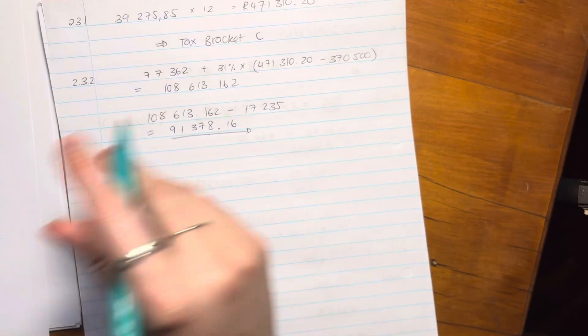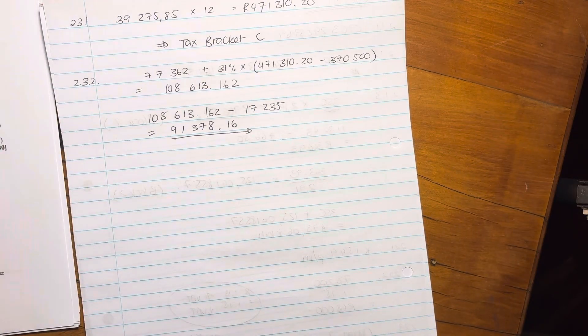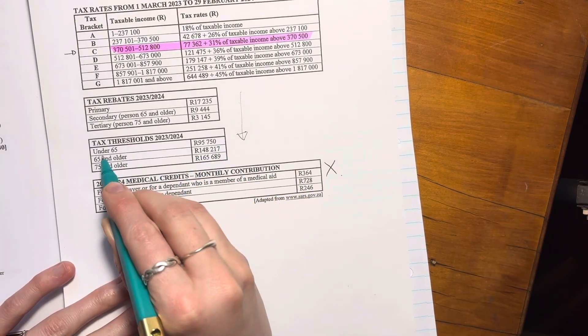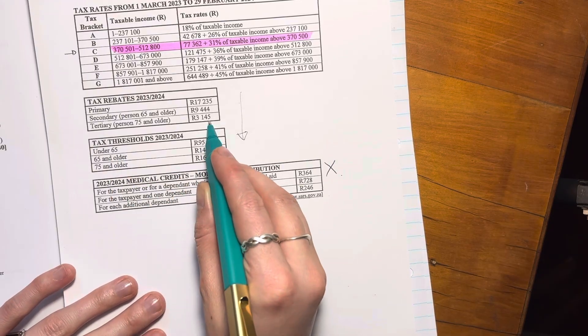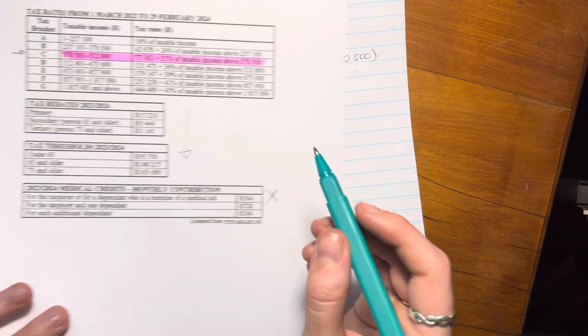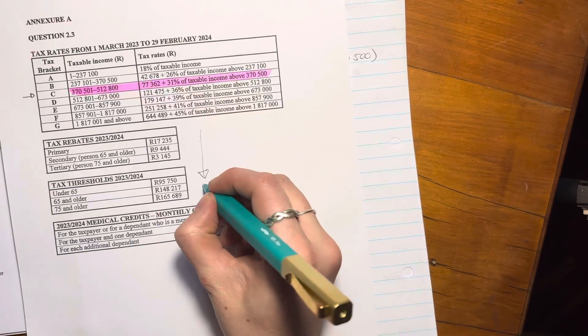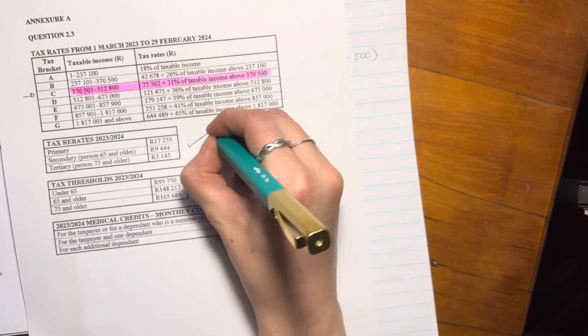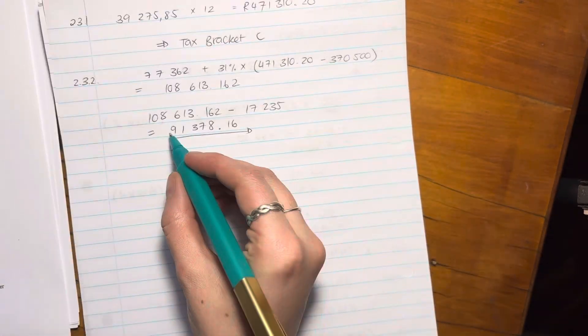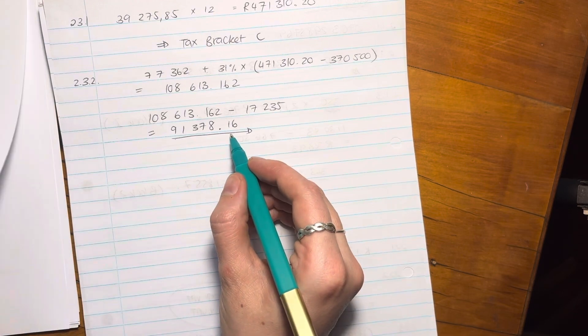Right. Over here, it was basically saying this is the under 65s. If you earn that amount or less, you won't get taxed. So we know that she earns way more than that. So she is going to be taxed. So we're going to completely ignore this table as well. So we took account of this table and this table. And that's her amount that she'll pay for tax.